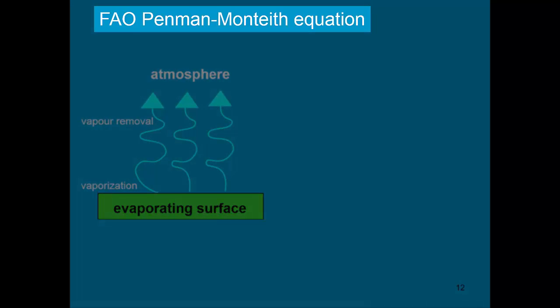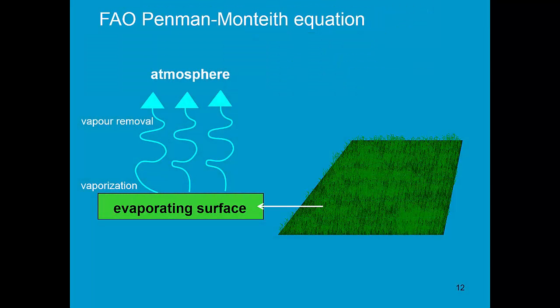Only researchers are able to determine those resistances. The FAO Penman-Monteith equation considers the Penman-Monteith equation and it solves it for one particular case. Namely, for the reference crop, which is grass, under standard conditions.